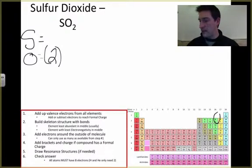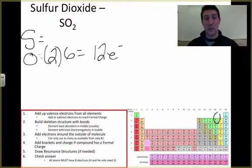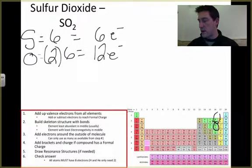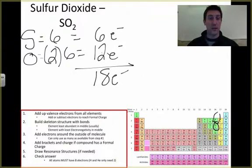We find oxygen on the periodic table. It has six electrons, so we get 12 electrons from the two oxygens. Sulfur is right below it, giving us six more electrons. We add these up: 12 plus 6 equals 18 electrons to build our structure.